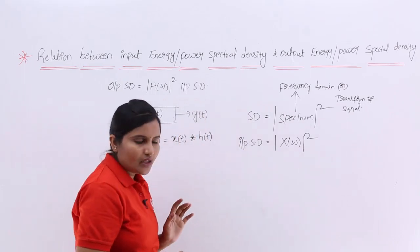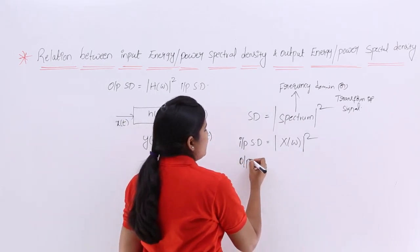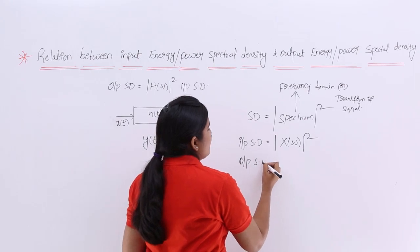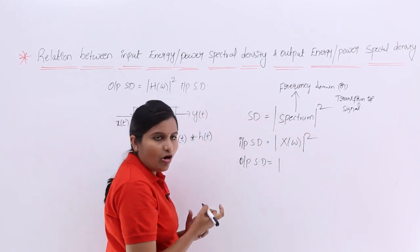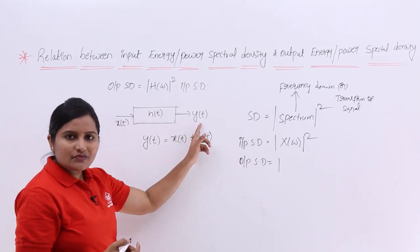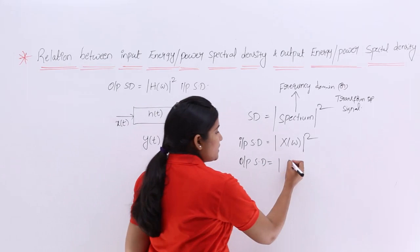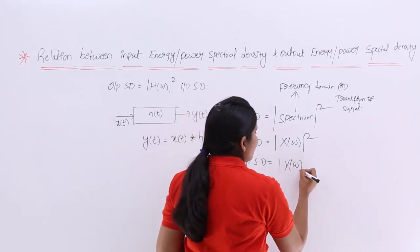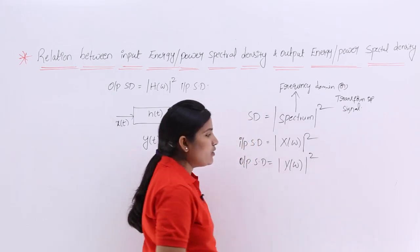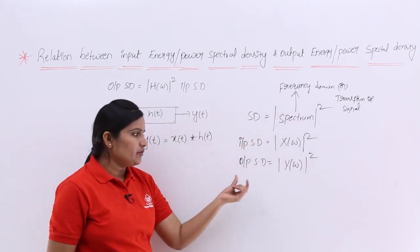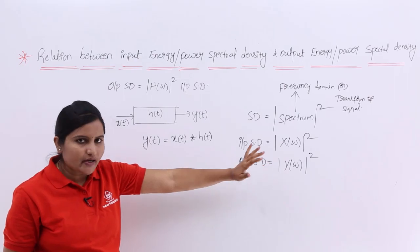Similarly, if you want to get the output spectral density, you need to consider the output spectrum. The output spectrum is the Fourier transform of Y of t, which gives Y of omega. So Y of omega whole square will give you the output spectral density.